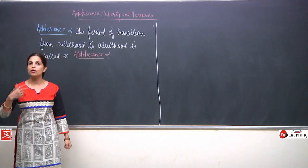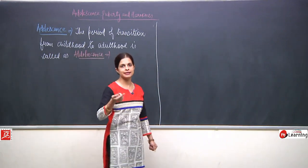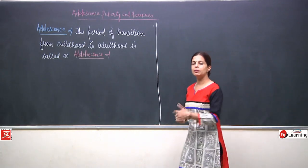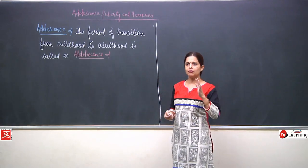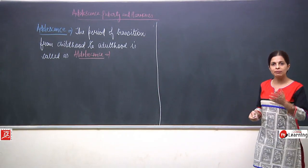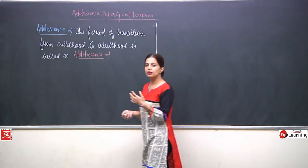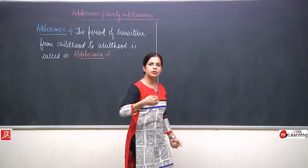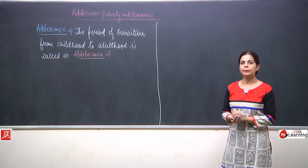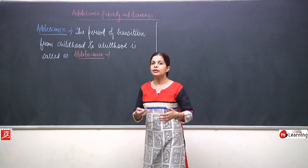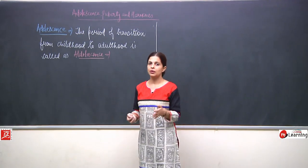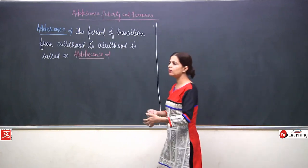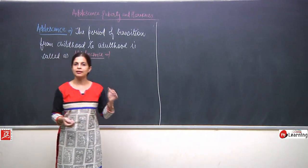In adolescence, the child wants to be more with friends. They understand the language of friends. Whatever parents or teachers say, they tend to avoid that. They feel more comfortable and quite mature — they feel they can take their own decisions. They will avoid going with parents and will always love to be with their friends, in their friend circle, in their groups.